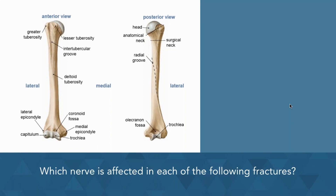Let's first look at the surgical neck, which we can see highlighted here. Fractures of the surgical neck of the humerus are really common in elderly people, especially if they have osteoporosis.